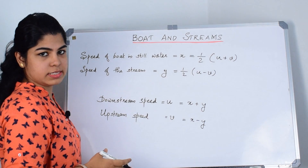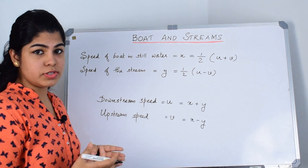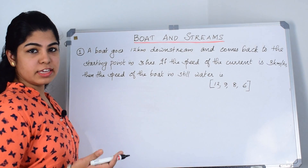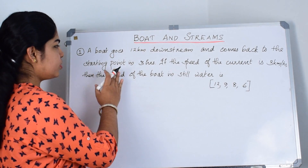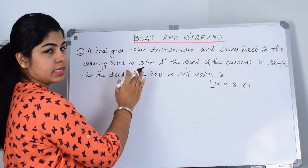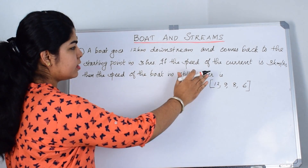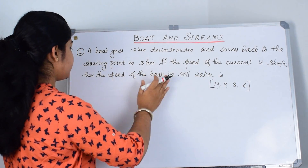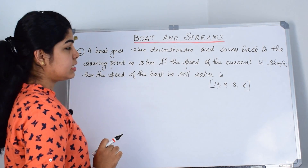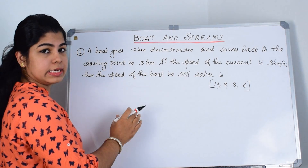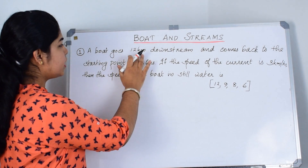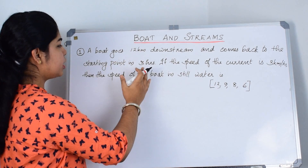Now let us study how to solve difficult boat and stream questions using shortcut tricks. Our first question: a boat goes 12 kilometers downstream and comes back to the starting point in 3 hours. If the speed of the current is 3 kilometers per hour, then what is the speed of the boat in still water? Let us check which details are given: the one-side distance is 12 kilometers.